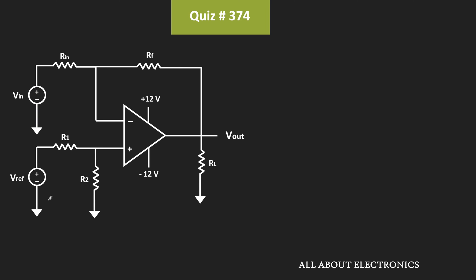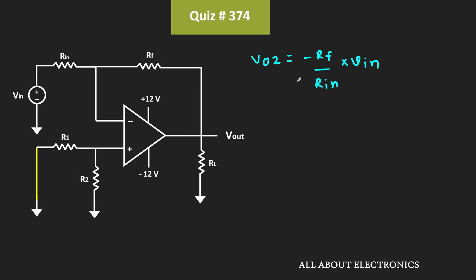Similarly, let us find the output voltage when input voltage Vin is acting alone. We consider Vreference as zero, so R1 and R2 are connected to the ground terminal. In this condition, the op-amp is configured in the inverting configuration. The output voltage Vo2 equals minus Rf divided by Rin times Vin.